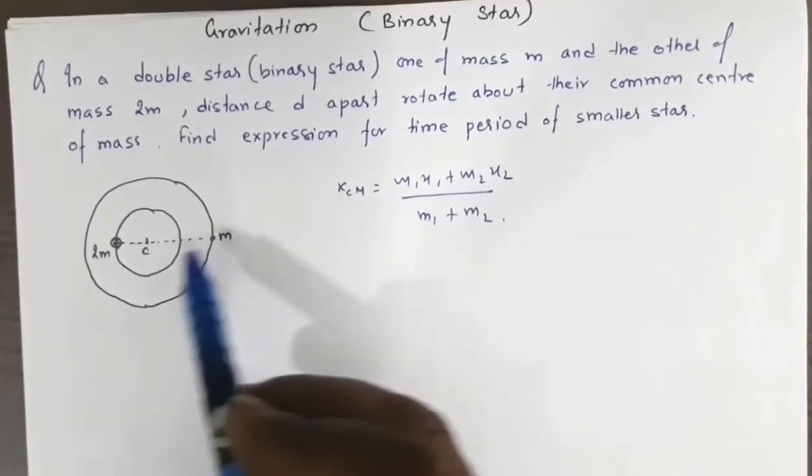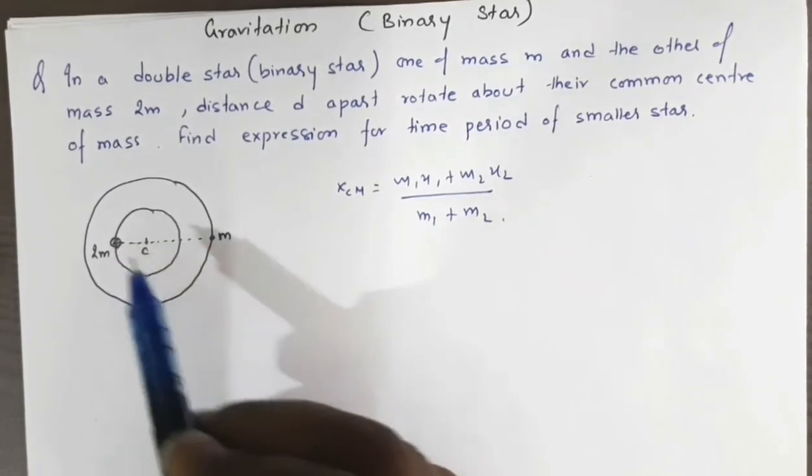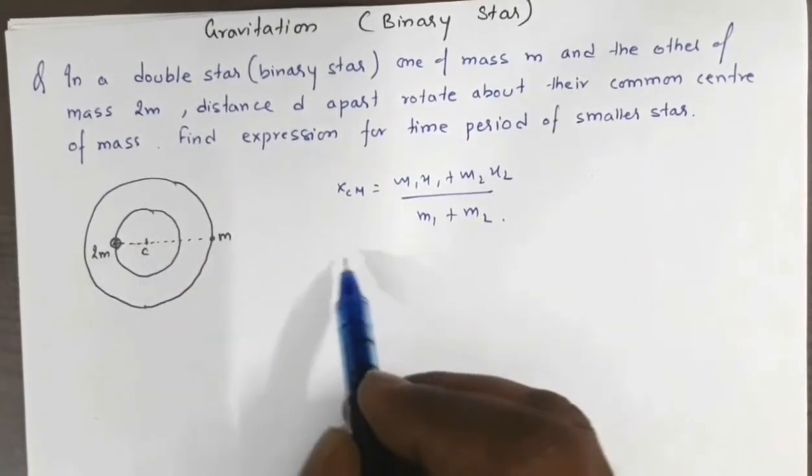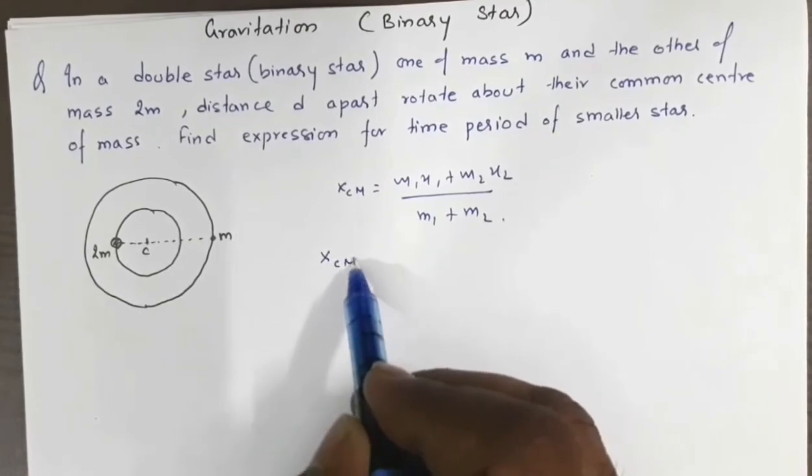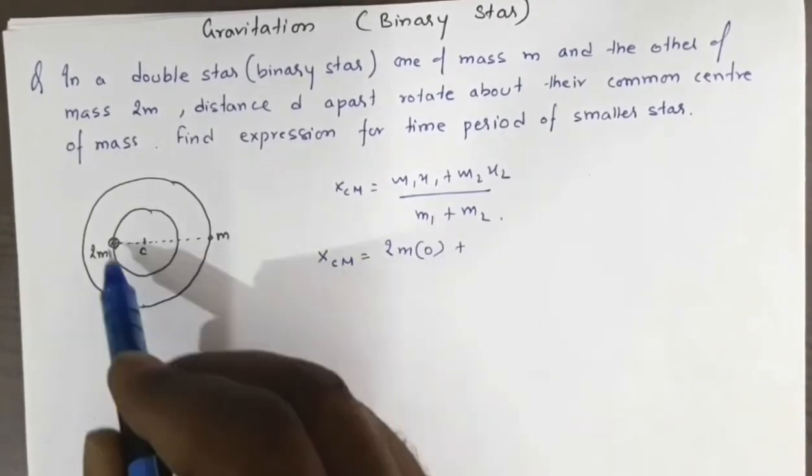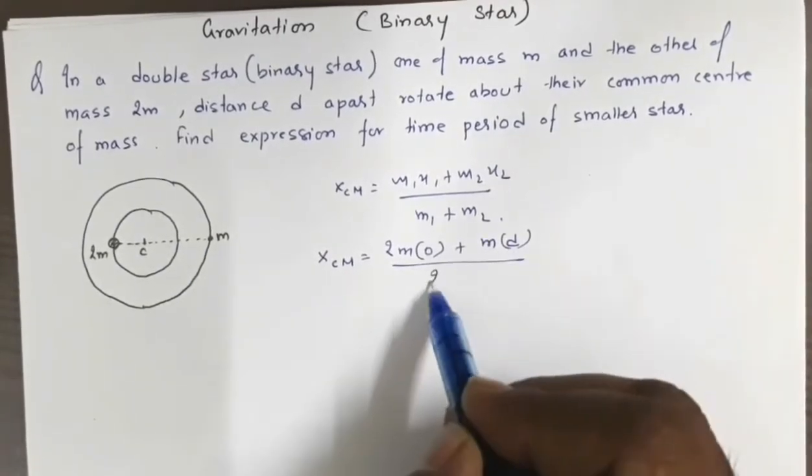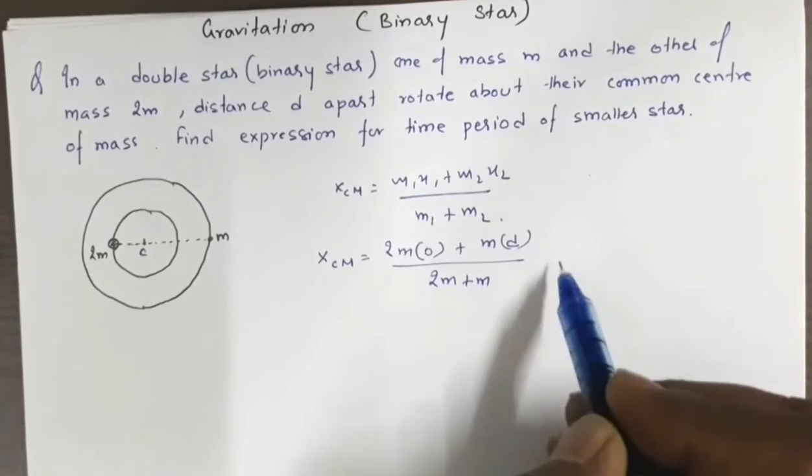If we use this concept here - this star is 2m. If we assume this to be at the origin and measure distance from this point, then x_cm = (2m·0 + m·d)/(2m + m) = d/3.